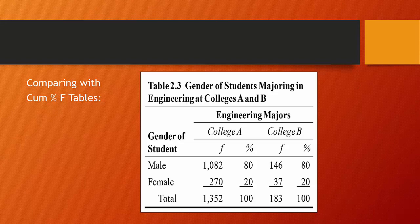270 of 1352 is only 20% for College A. And for College B, 37 of 183 is also 20%. So neither college is more likely to admit females to their engineering program. Thus, the only claim that can really be made by College A is that they have more students.